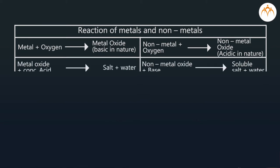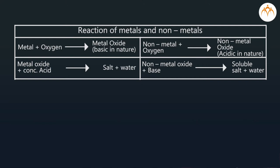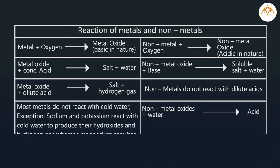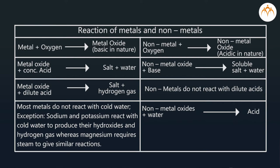Metal oxide plus acid gives salt plus water. Non-metal oxide plus base gives soluble salt and water. Metal plus dilute acid gives salt and hydrogen gas. Non-metals do not react with dilute acids. Most metals do not react with cold water — exception: sodium and potassium react with cold water to produce their hydroxides and hydrogen gas, whereas magnesium requires steam for similar reactions. Non-metal oxide plus water gives acid.